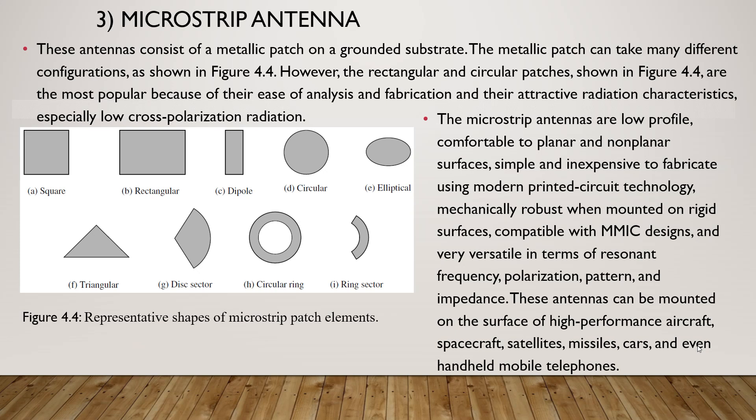Microstrip antennas consist of a metallic patch on a grounded substrate. The metallic patch can take many different configurations as shown in figure 4.4. However, the rectangular and circular patches are the most popular because of their ease of analysis, fabrication, and their attractive radiation characteristics, especially low cross-polarization radiation. The microstrip antennas are low-profile, comfortable to planar and non-planar surfaces, simple and inexpensive to fabricate using modern printed circuit technology, mechanically robust when mounted on rigid surfaces, compatible with MMIC designs, and very versatile in terms of resonant frequency, polarization, pattern, and impedance.